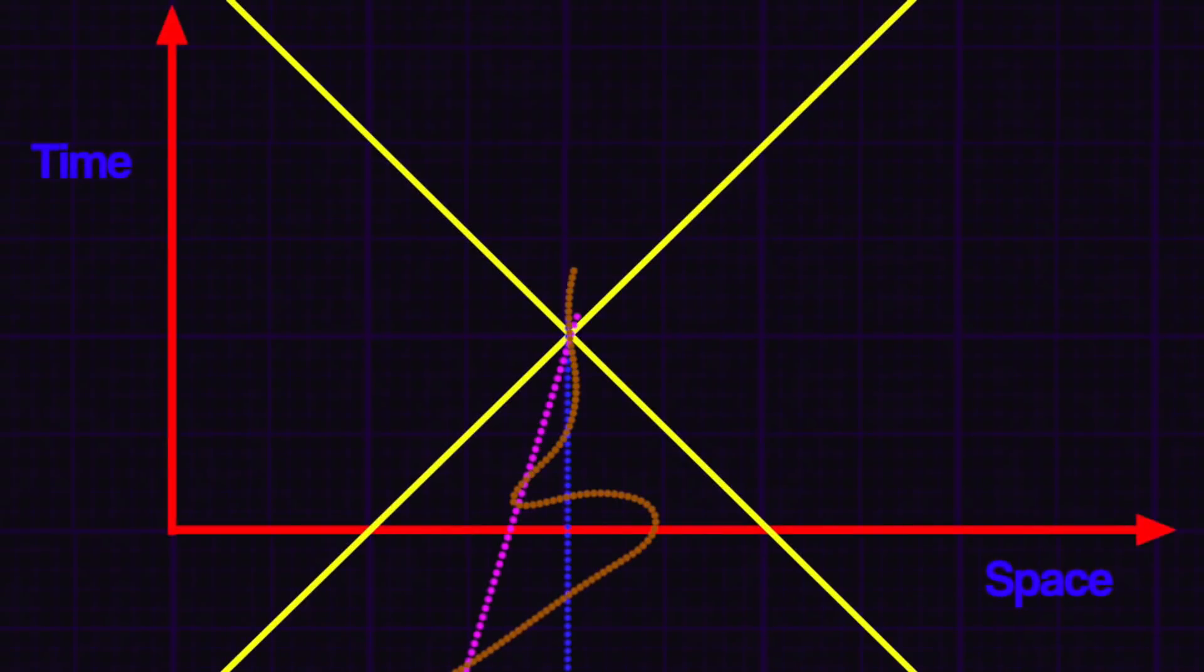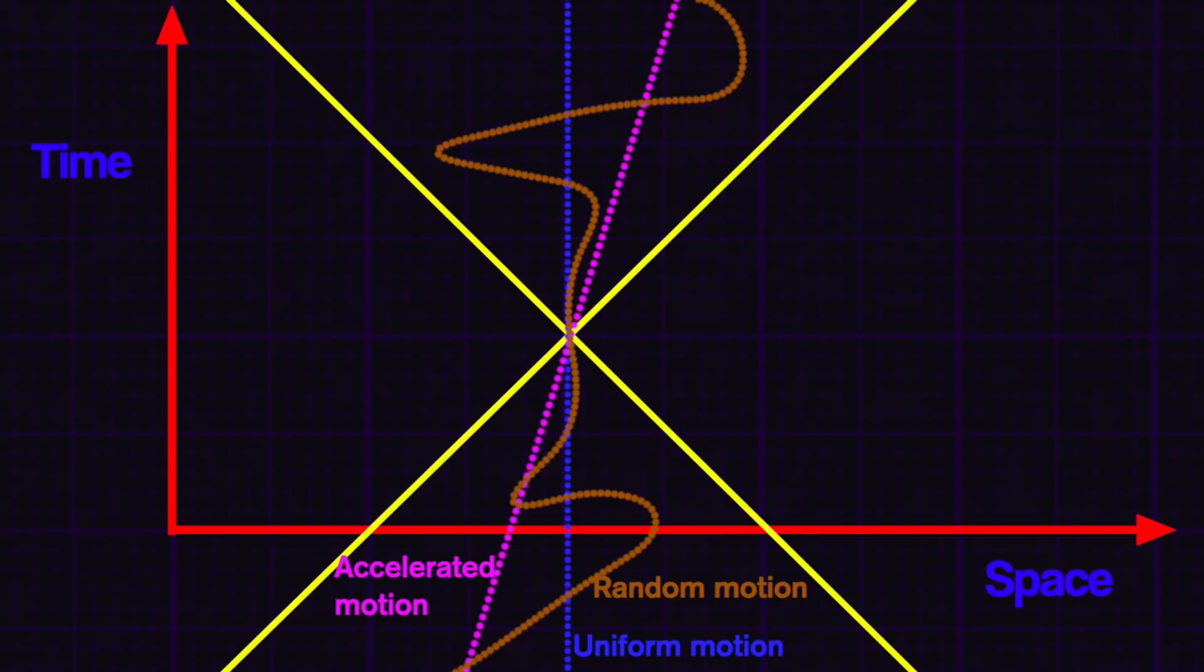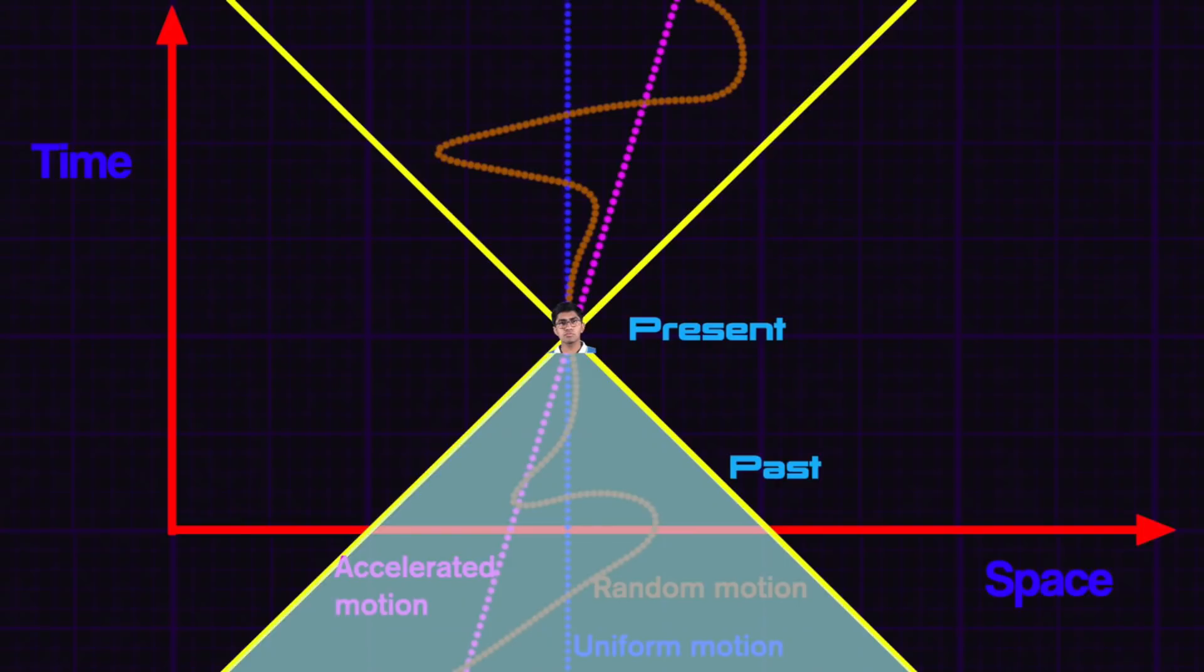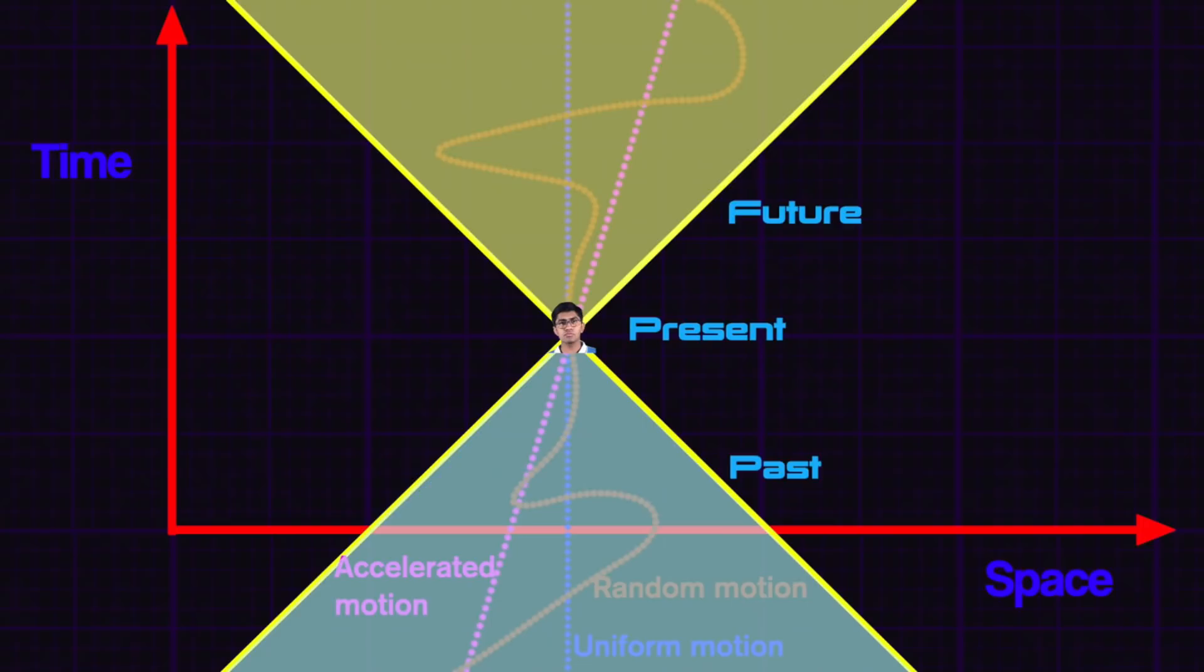This is how some of those actions look like on a space-time diagram, where the two yellow lines represent the constraint that you can't go faster than light. The part below your present on the time axis represents your past, and the other one represents your future. Or to put it crudely, which seems to belittle your life, these two regions represent your entire life.